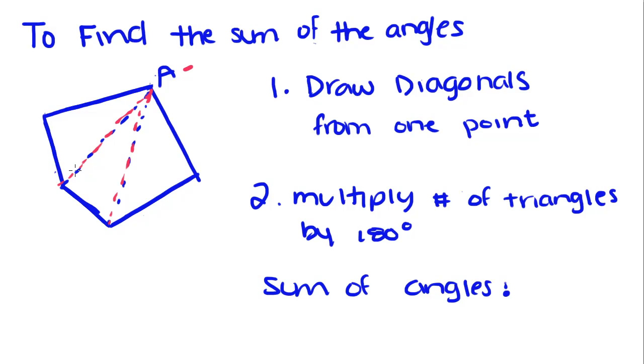Multiply the number of triangles by 180. There's one, two, three triangles, and we multiply 3 by 180.